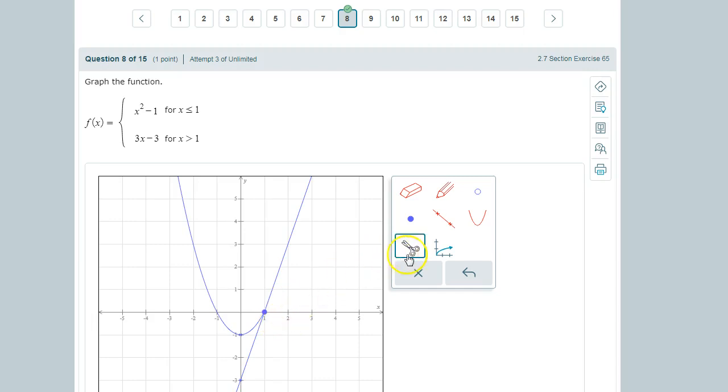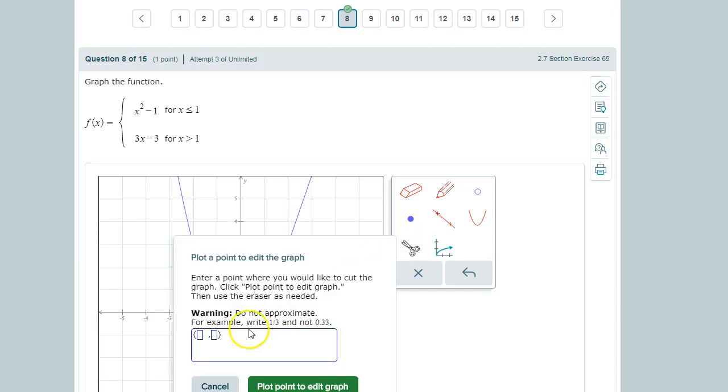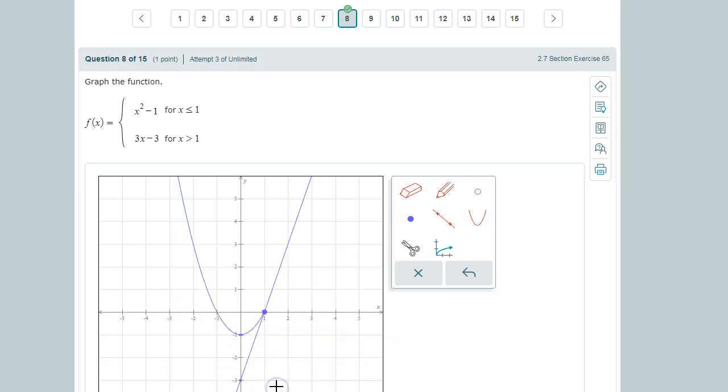Now we use the scissors to edit the graph, so x greater than one. Here's one, and when x is one, y is zero. We use the eraser button to erase the highlighted portion of the line. So here's our graph.